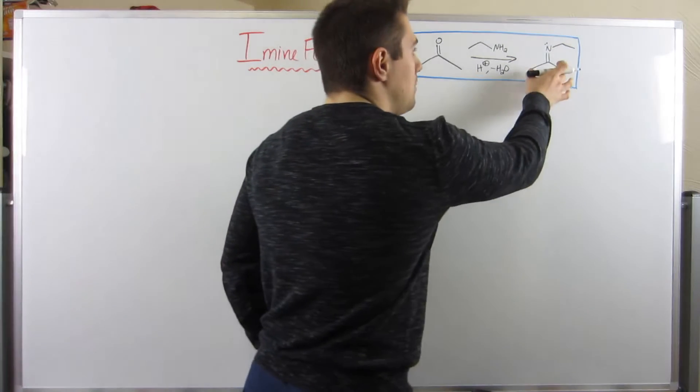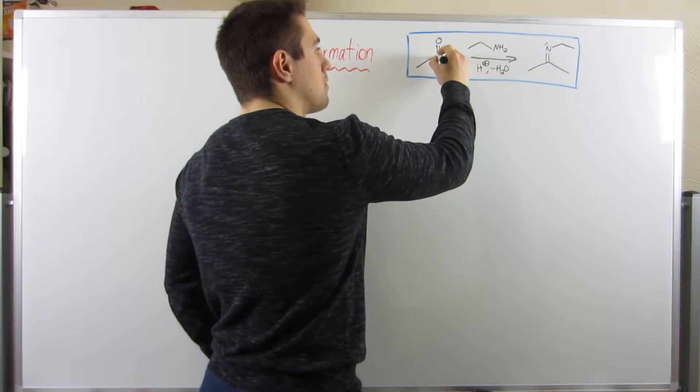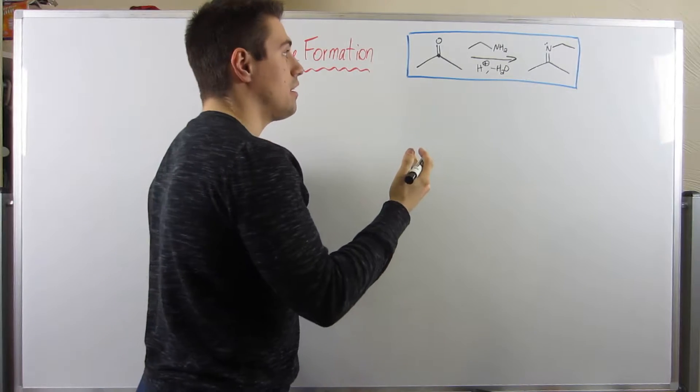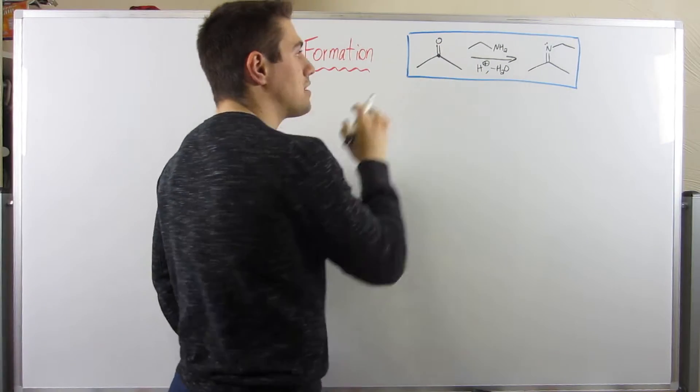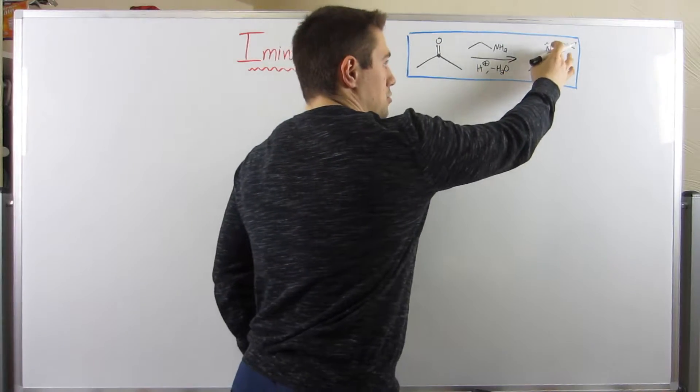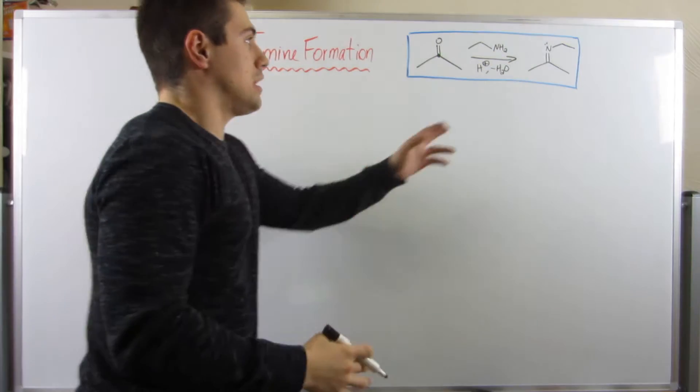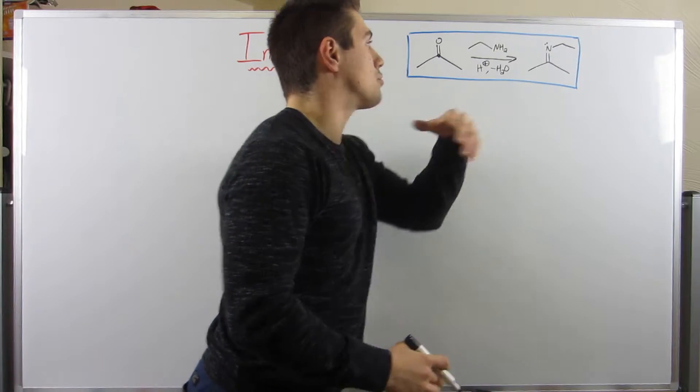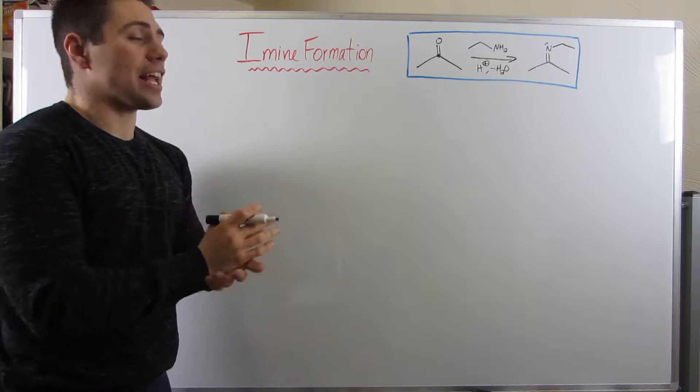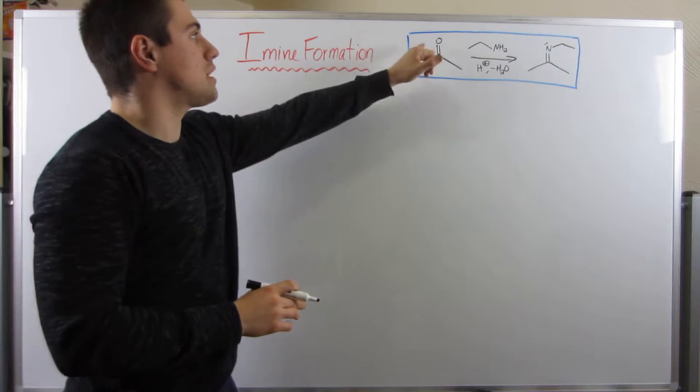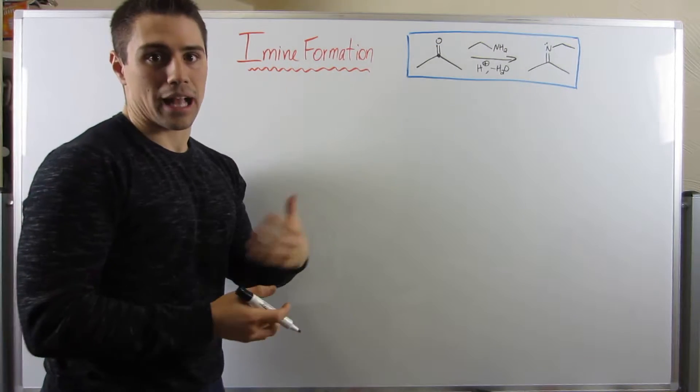Here's what an imine is. An imine, if you look at a carbon that was part of a carbonyl you started out with, if you were to just keep that double bond, throw on a nitrogen, and then some alkyl group or a hydrogen, that's what an imine is. You're basically replacing your oxygen right here with a nitrogen and some group attached.